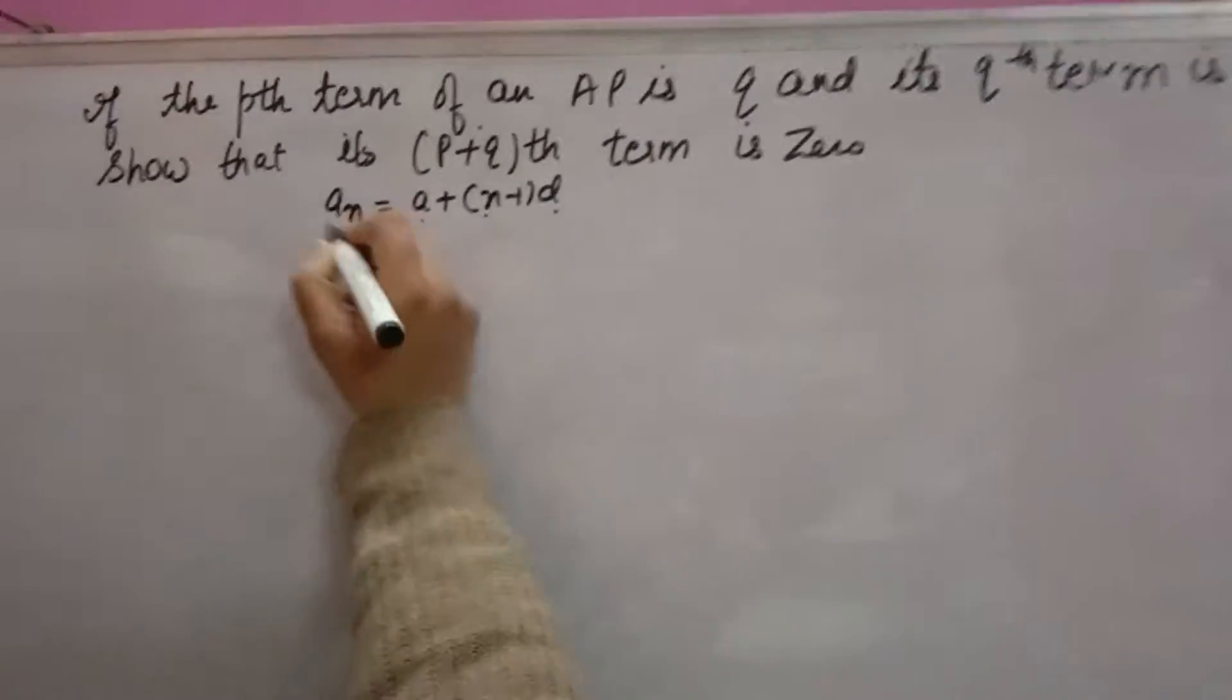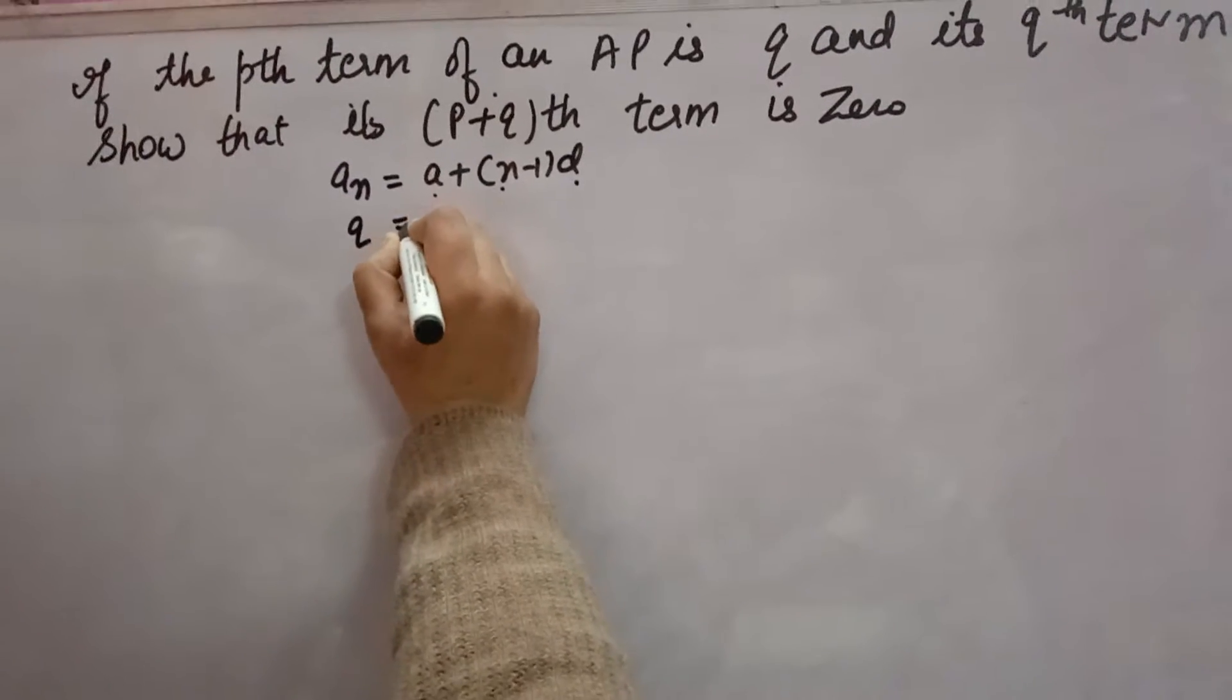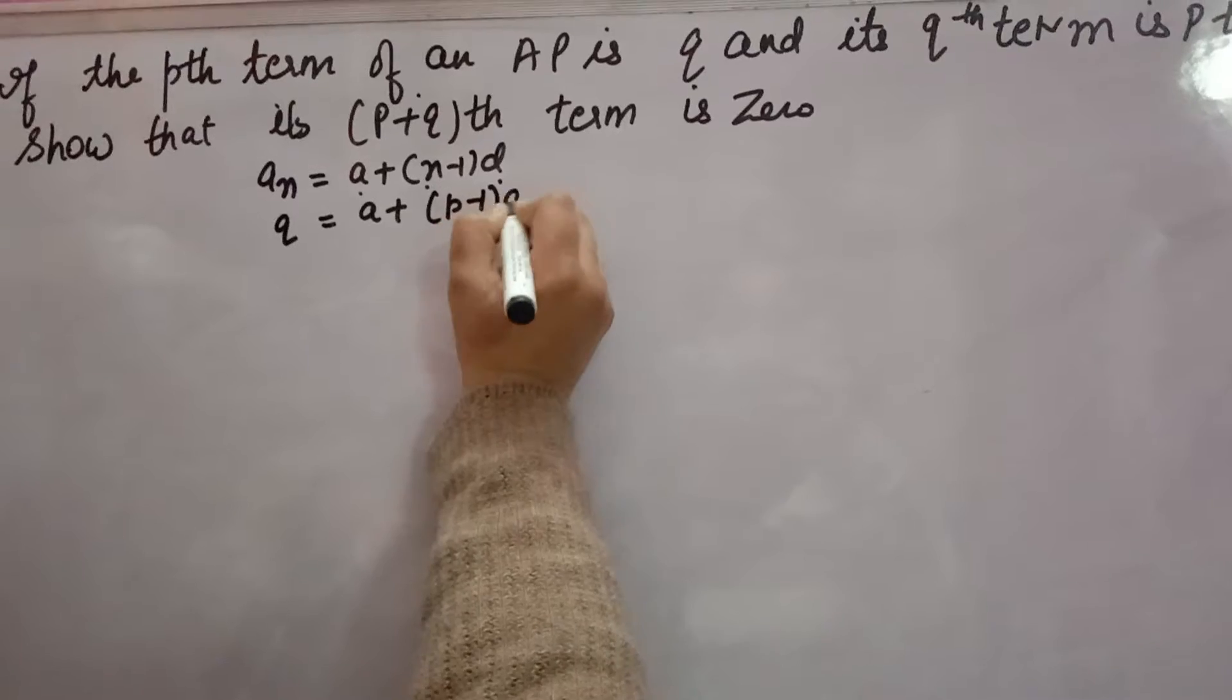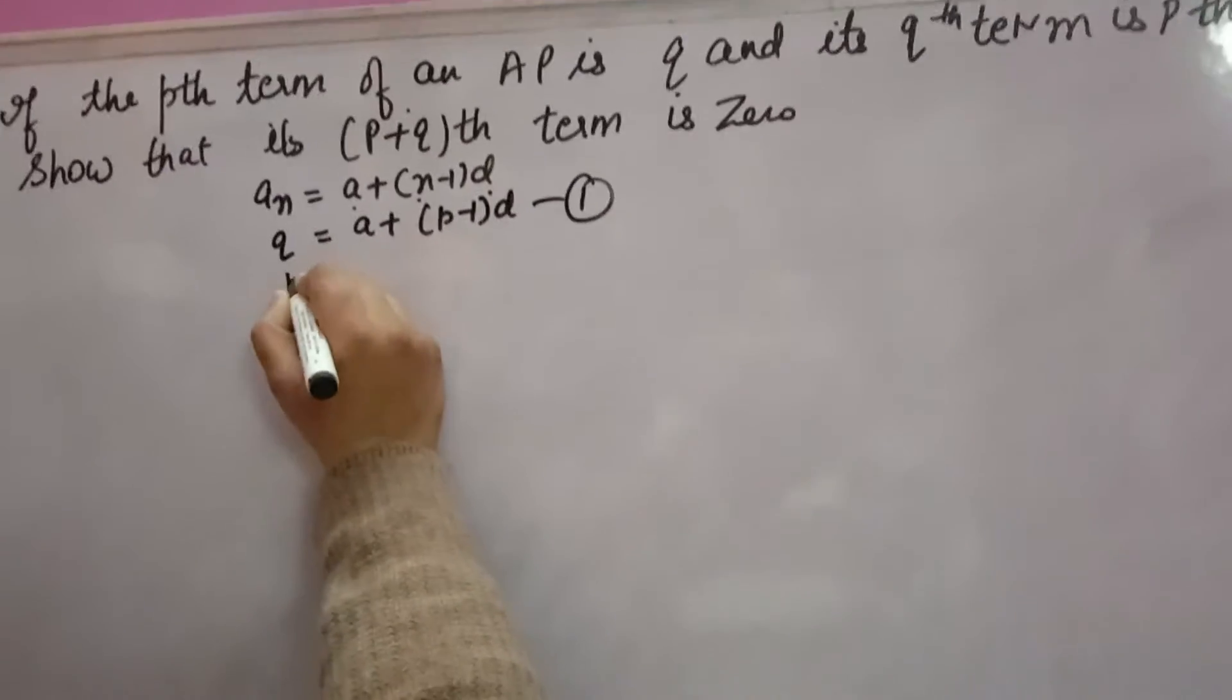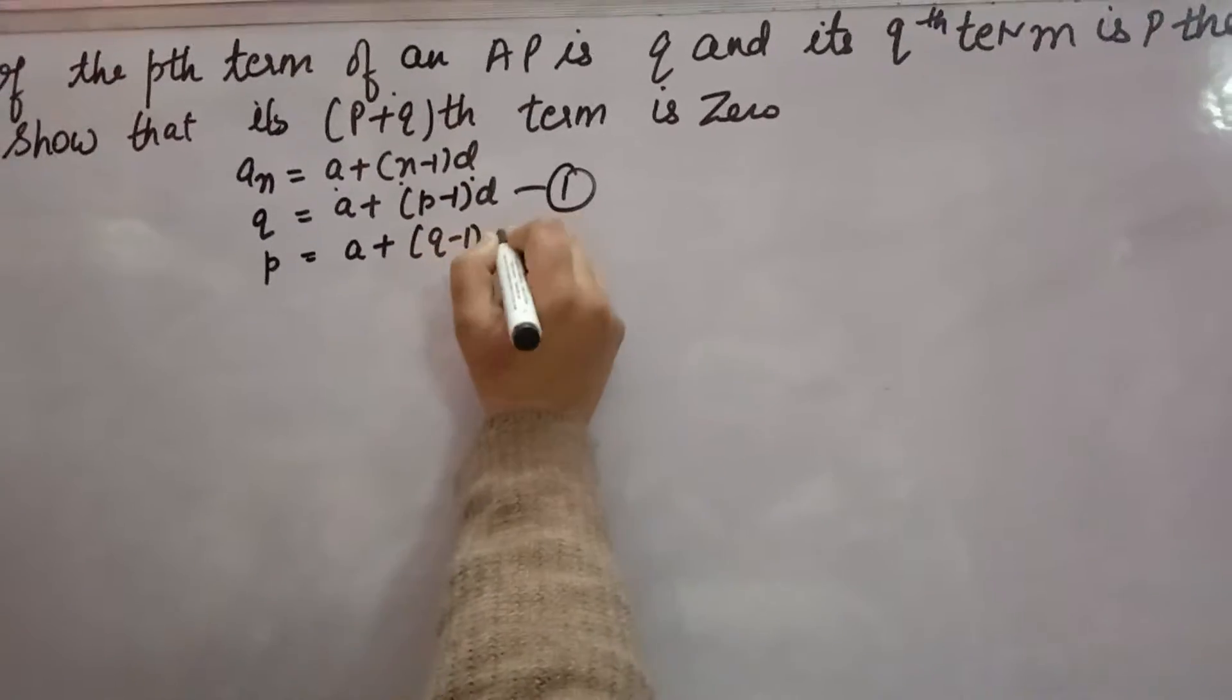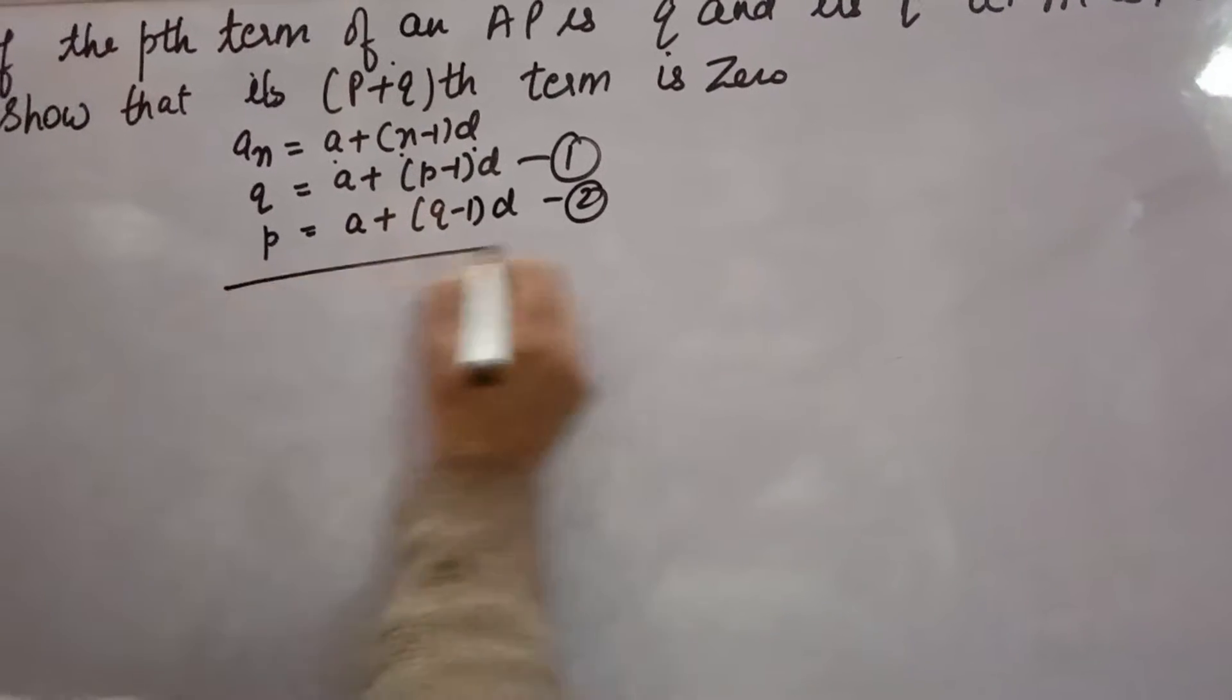Now the pth term is Q, so in place of n, p will come: Q = A + (p-1)D. This is the first equation. And the qth term is P, so P = A + (q-1)D. This is the second equation.